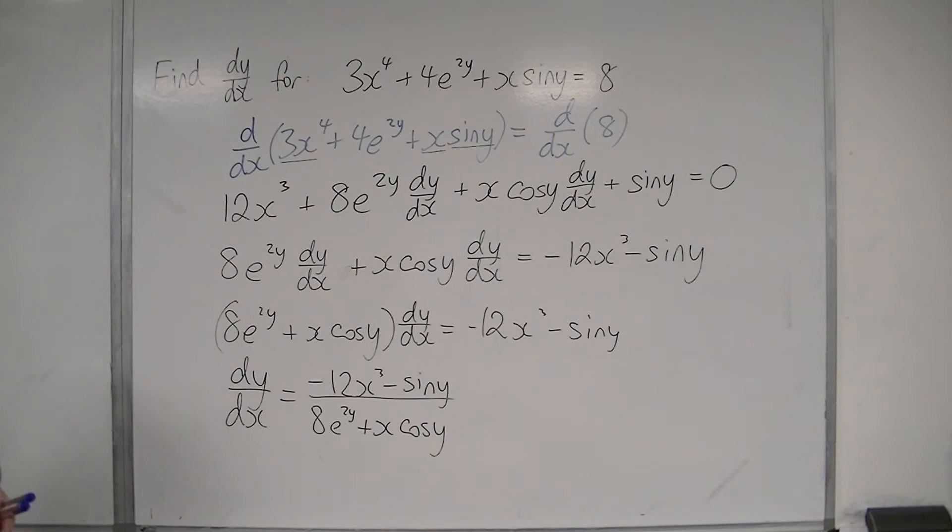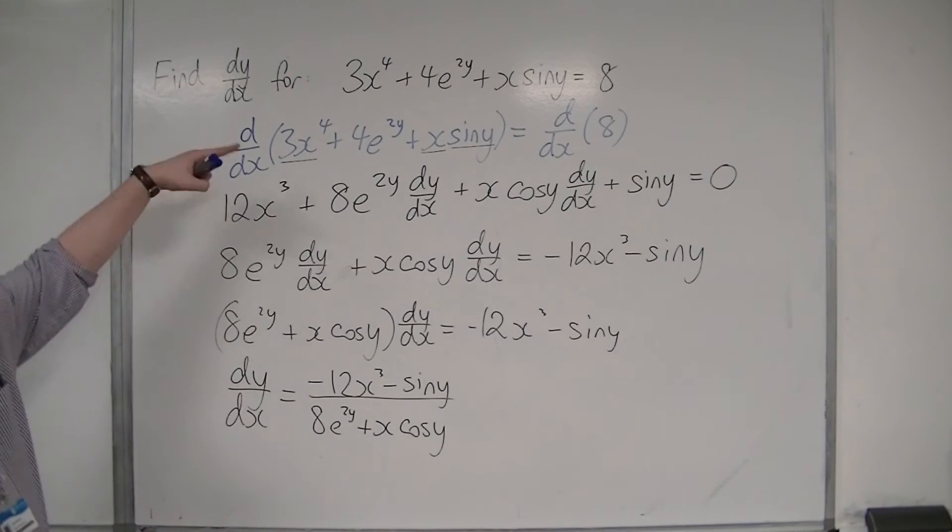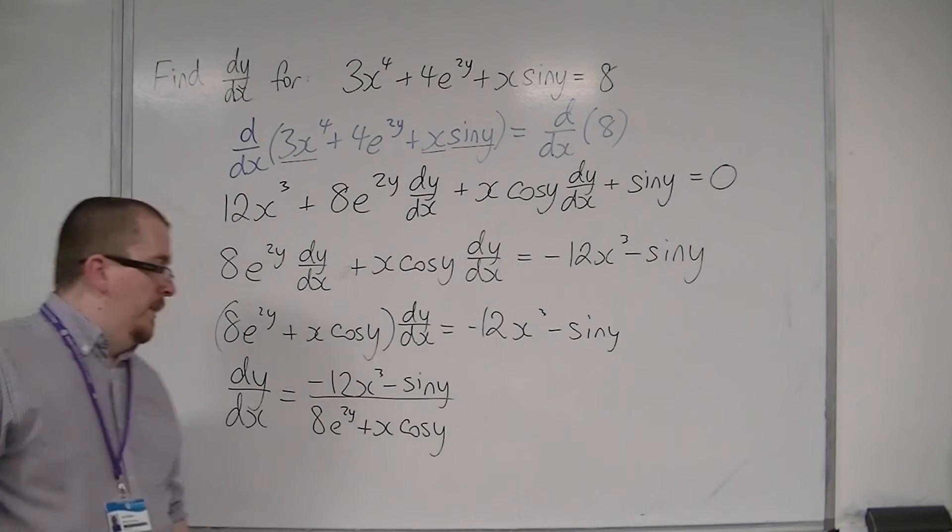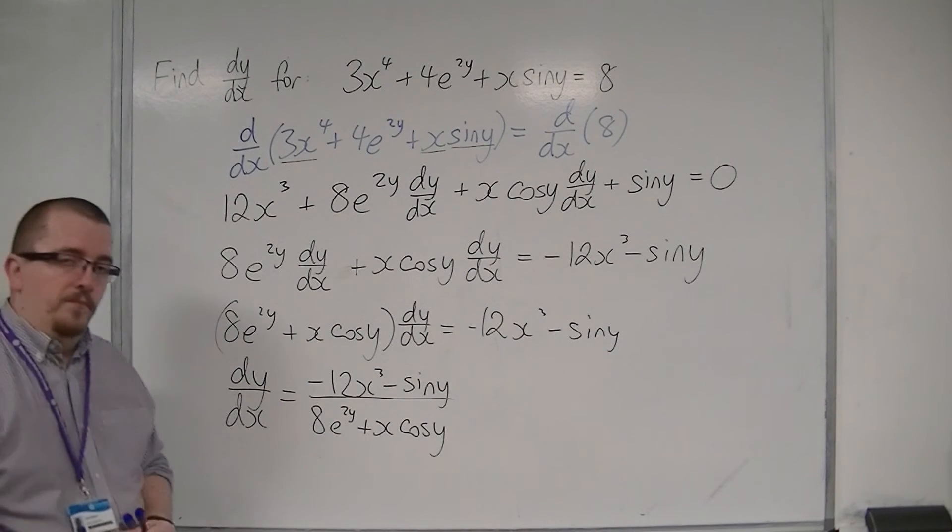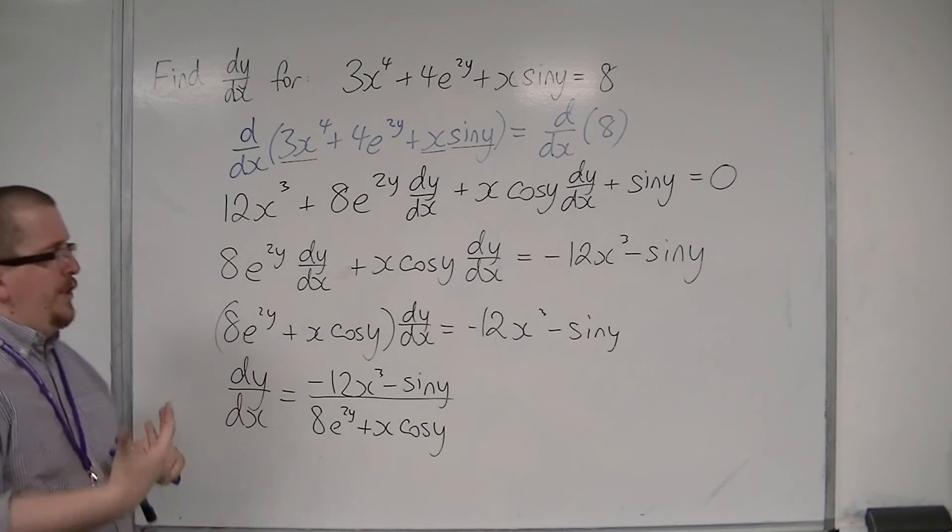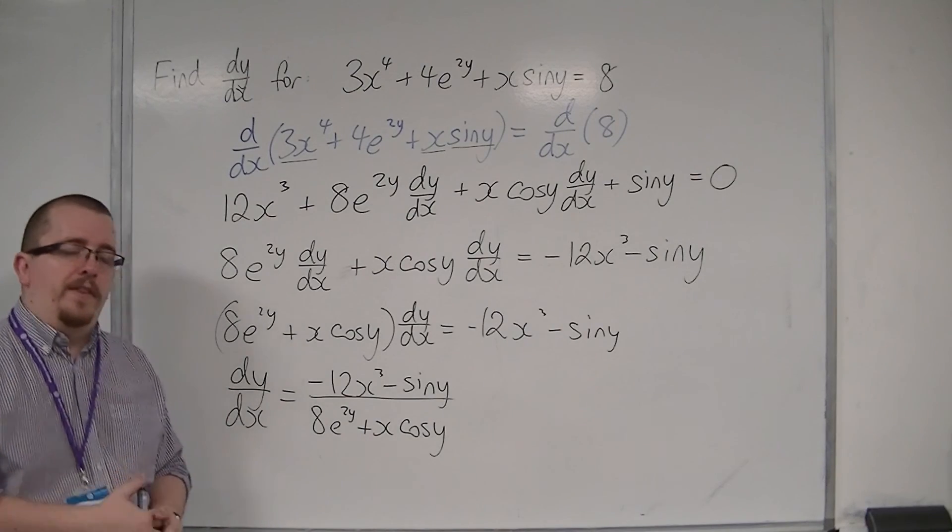So dy by dx does not look very pretty whatsoever. The original equation didn't look very pretty either. But this is the process that we can now go through, differentiating each term, using the product rule, the chain rule, and differentiating y with respect to x in order to get down to the final answer there.